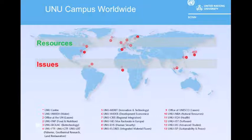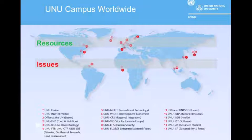Here in Bonn, we have the Vice Rectorate in Europe, which is responsible for liaisons with European institutions, as well as the United Nations University Institute for Environment and Human Security, UNU-EHS. Also highlighted on the map is the United Nations Institute for Global Health.